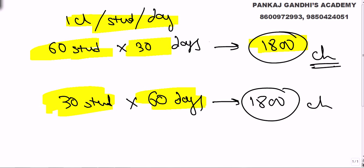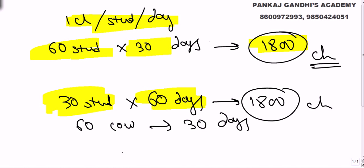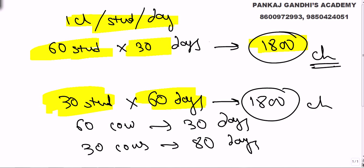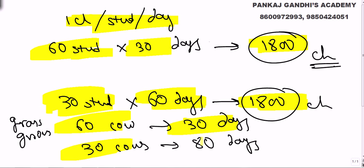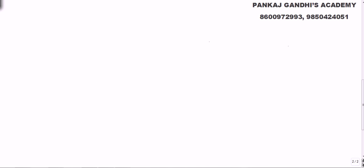Now this question says 60 cows eat the grass in 30 days, so 30 cows should eat the grass in 60 days — but the answer given is 80 days. Why? Because chocolates do not grow every day, but here grass grows every day. So it's not linear — 30 cows will take more than 60 days because grass keeps growing.